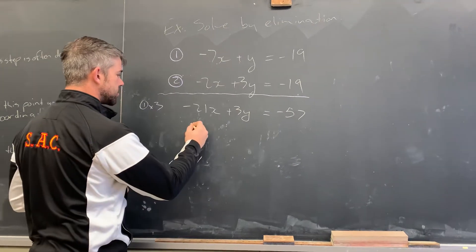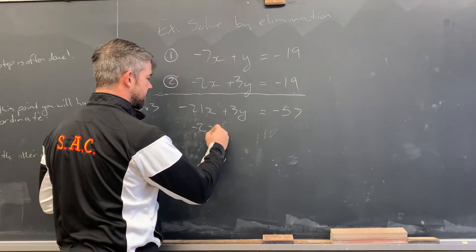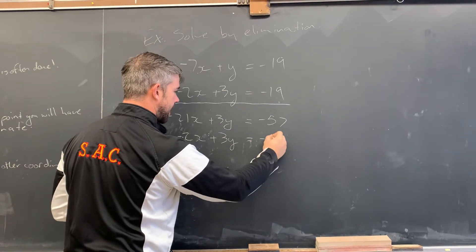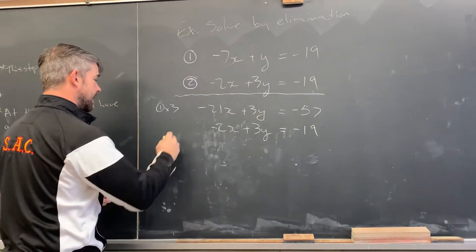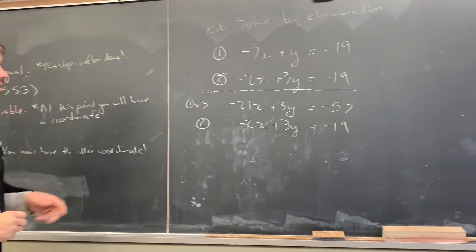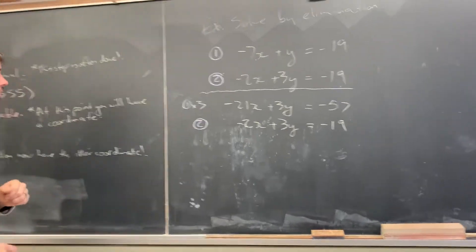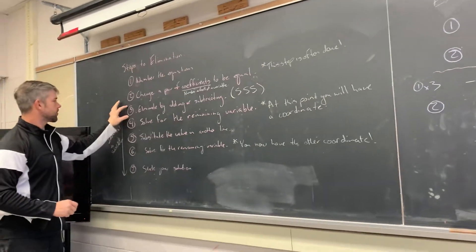Now I have that coefficient being three. So I'm going to write down equation two again just so that I have them one on top of the other lined up ready to do my subtraction or addition. And I'll just re-put that line there. So I've now done step two because I have a pair of coefficients that are identical.